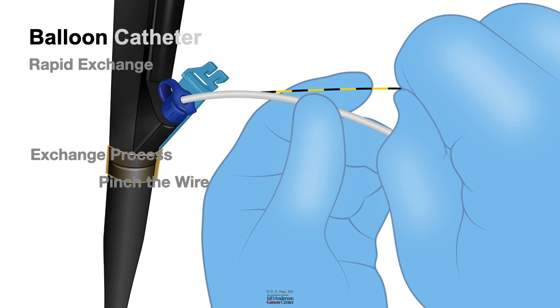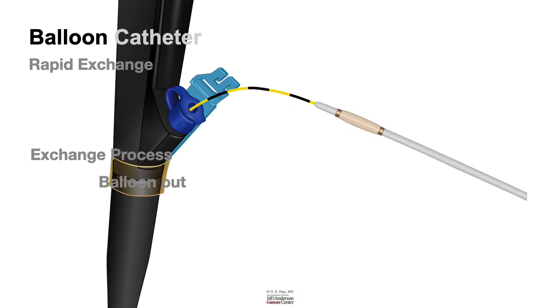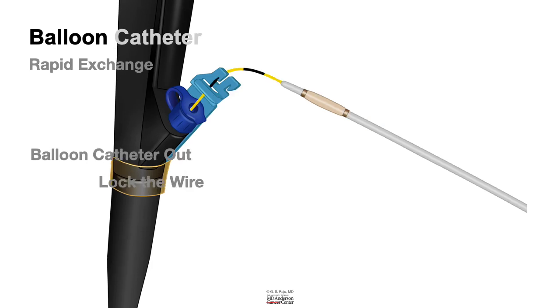Pinch the wire and pull the catheter with your left hand until the catheter has come out. Once it's come out, the next step is to lock the wire. Once the wire is locked, the wire is secure.